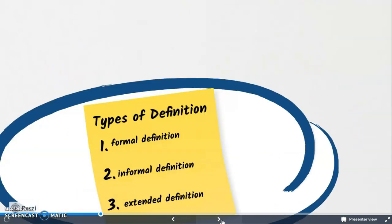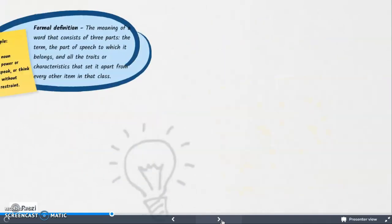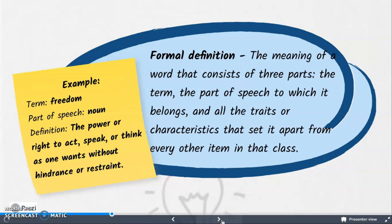There are three types of definition: formal definition, informal definition, and extended definition. When we say formal definition, the meaningful word consists of three parts: the term, the part of speech to which it belongs, and the traits or characteristics that set it apart from the other terms in that class. For example, the term 'freedom' — the part of speech is noun. The definition: the power or right to act, speak, or think as one wants without hindrance or restraint.